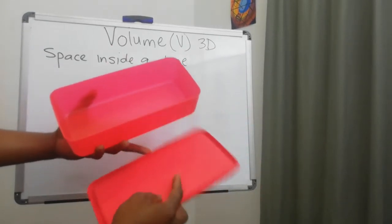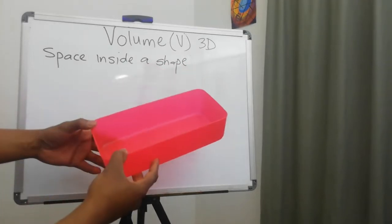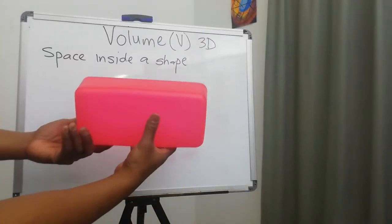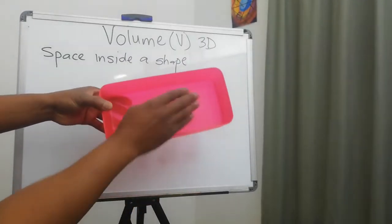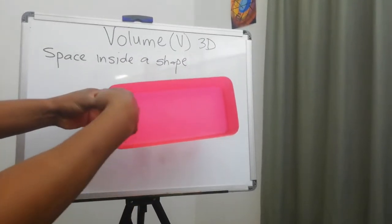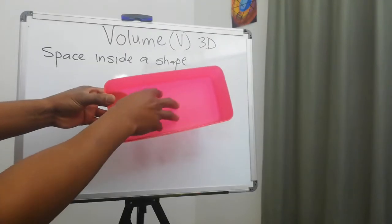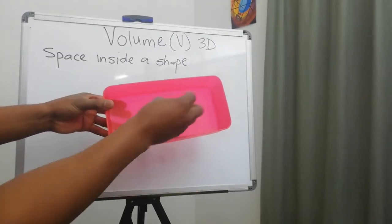Now if you look at this at the bottom or on the inside, you will see that we have a rectangular shape and this gives us our area on the inside.